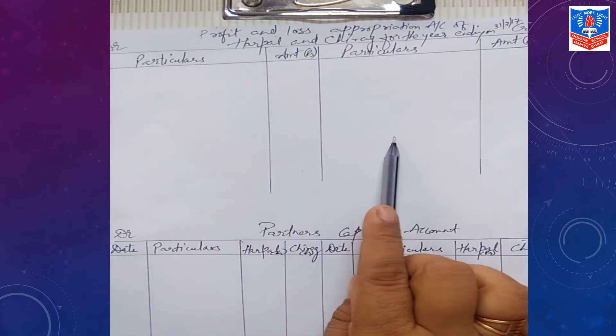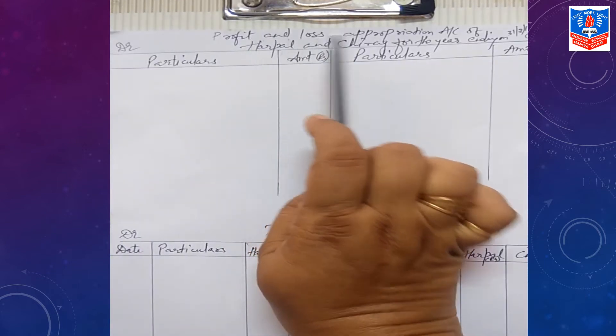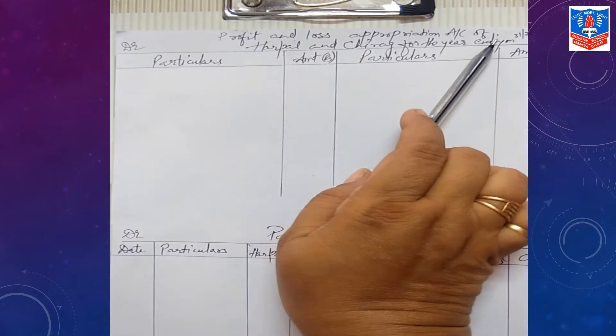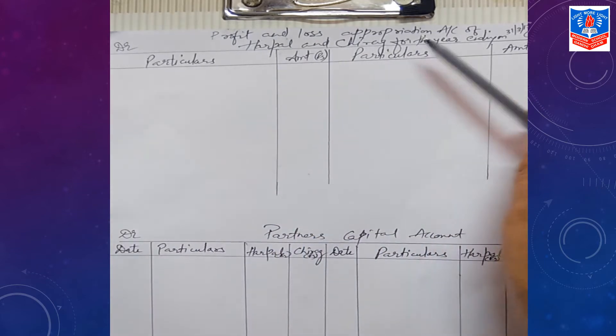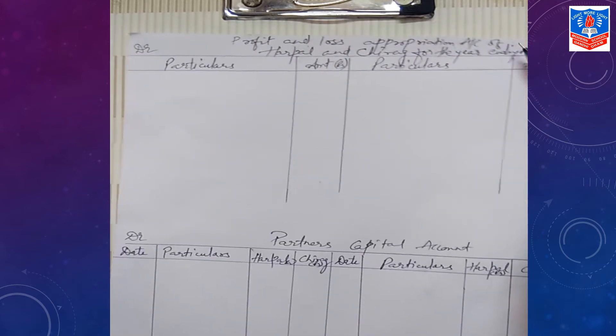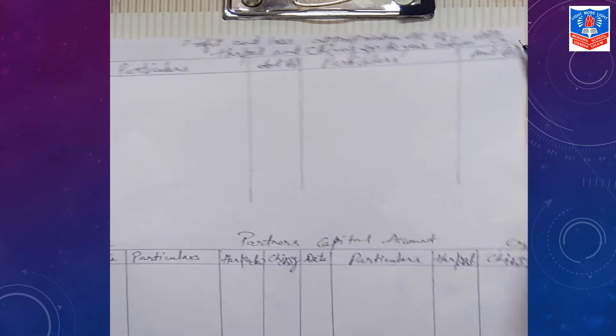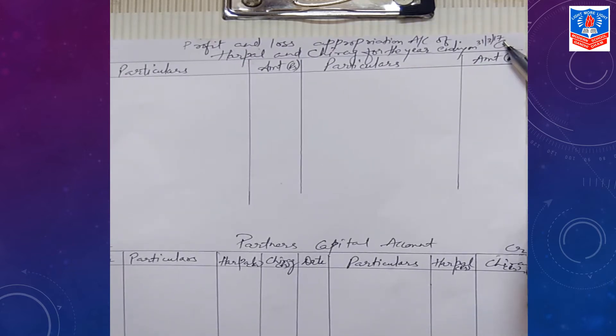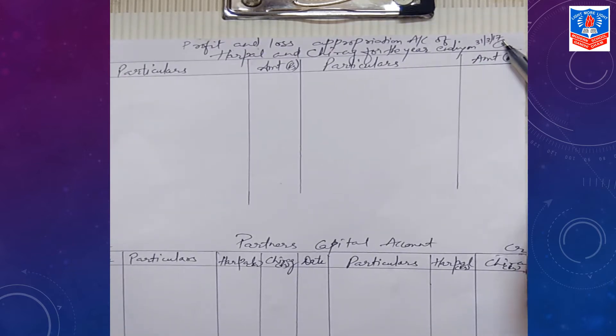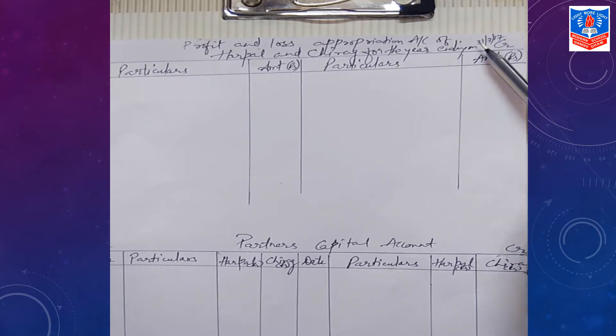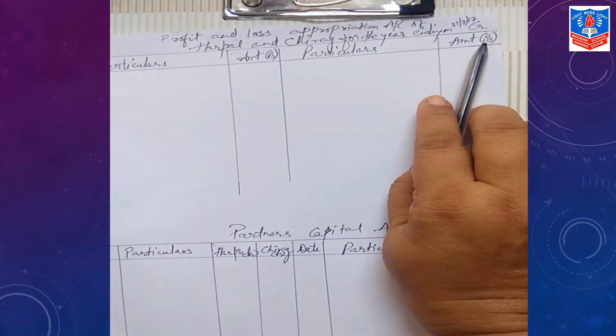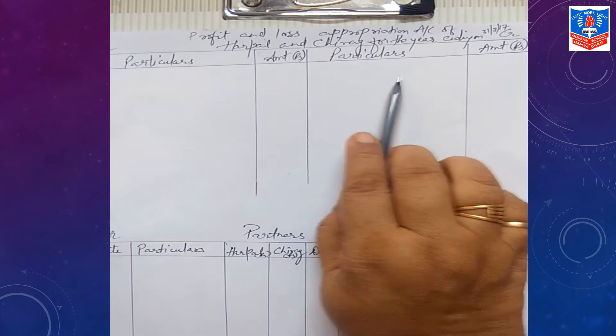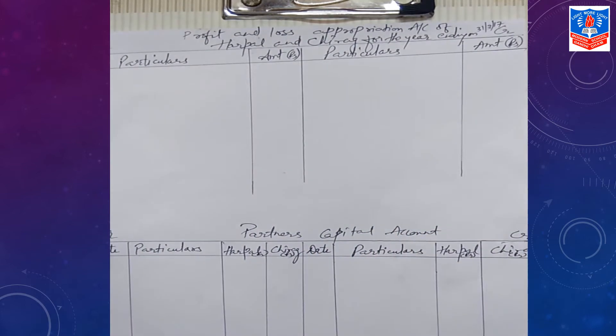This is an account firm heading Profit and Loss Appropriation Account of Harpal and Chirag for the year ending 31st March 2017, because this year starts from 2016 and ends to 2017. 31st March 2017 is the last working day. Two sides, debit and credit side. We need to mention particulars, amount in rupees, particulars, amount in rupees.